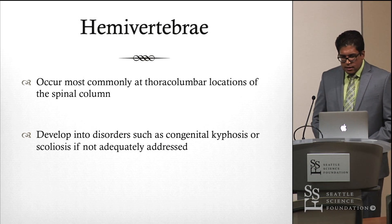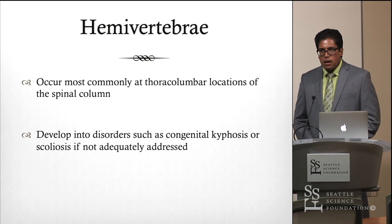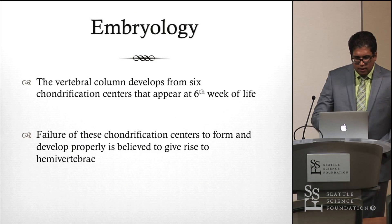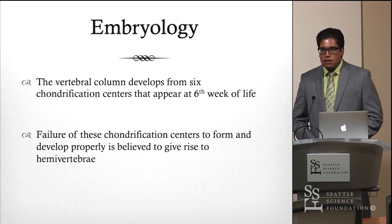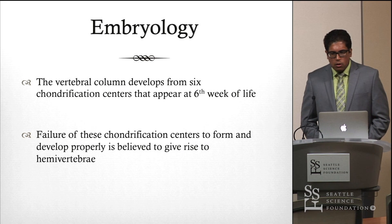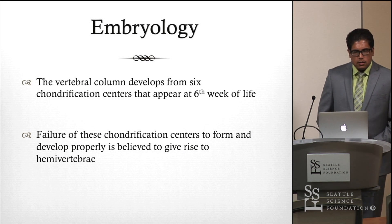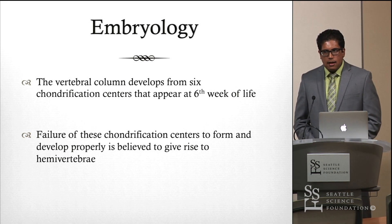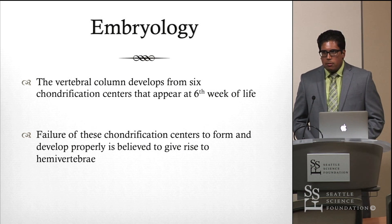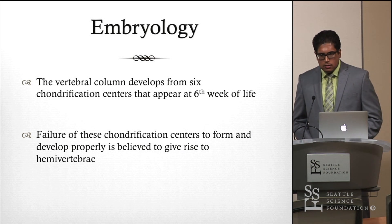If they are not operated on right away, hemivertebrae can develop into congenital kyphosis or scoliosis. Now I'm going to discuss the development and etiology of hemivertebra. Before discussing the abnormal, it's always a good idea to review the normal. The key takeaway is that during any step of the developmental sequence of the vertebral column and vertebral bodies, hemivertebra can occur at any aberration or misstep during this sequence.